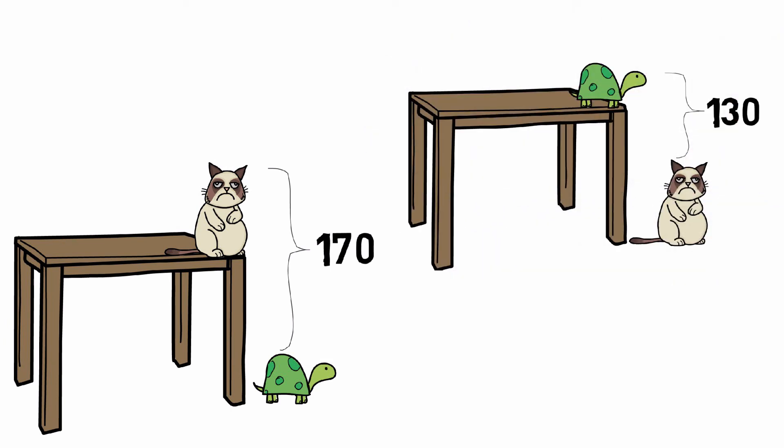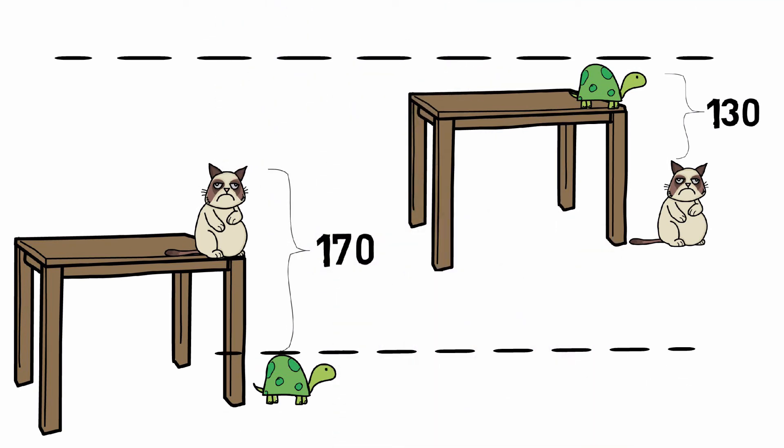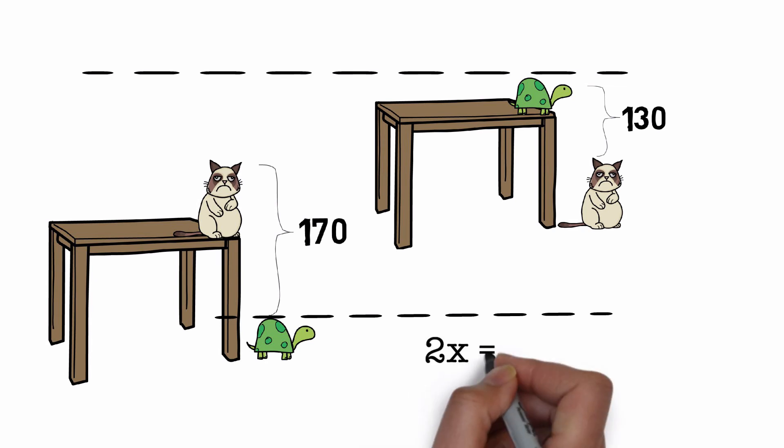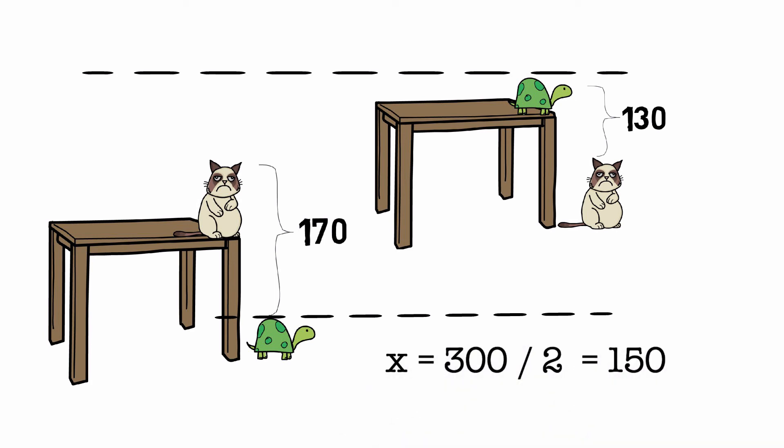I'm going to place both the images side by side like so. Now I'm going to draw two horizontal lines like so. Can you see that the distance between these two lines is twice the height of the table? So if X is the height of the table, we can see that 2X is equal to 170 plus 130, which is 300. That means X is equal to 150.